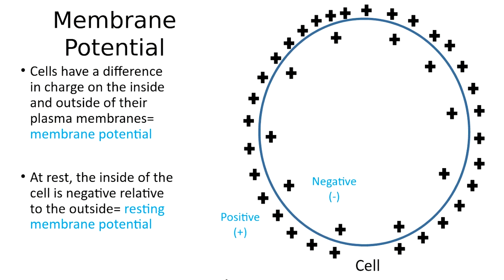As we build our understanding of membrane potential and its importance in skeletal muscle contraction, there's another term to become familiar with: resting membrane potential. When we talk about a skeletal muscle cell at rest, it's not contracting. When a nerve is at rest, it's not generating an electrical signal. Both have a difference in charge on the two sides of the membrane whereby the inside is negative relative to the outside, equal to negative 70 millivolts.